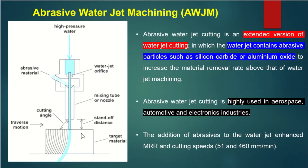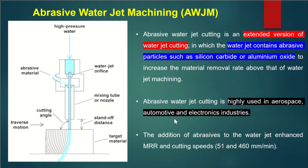The jet makes contact with the workpiece at a particular angle, and the entire setup or the workpiece table can be moved along a particular length. Where the water jet makes contact with the workpiece, material gets removed from the surface. Key parameters include standoff distance and cutting angle. Abrasive water jet cutting is highly used in aerospace, automotive, and electronic industries.